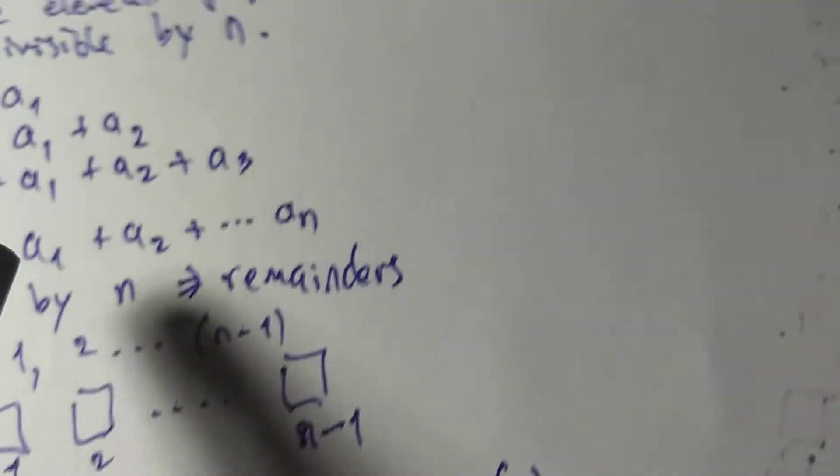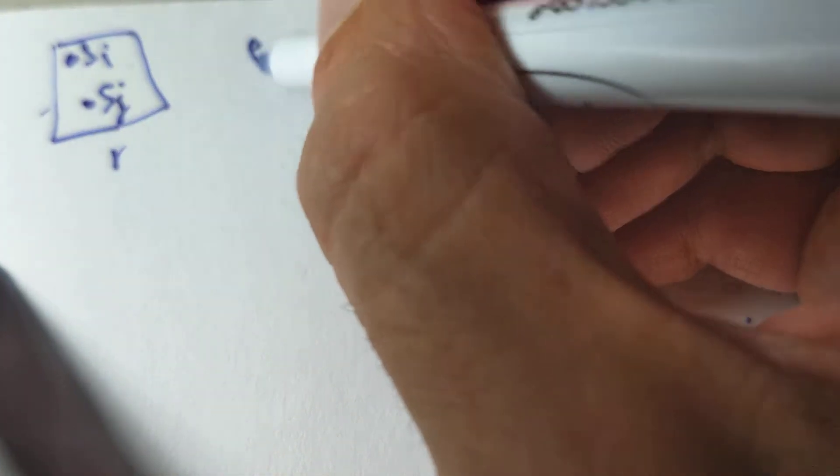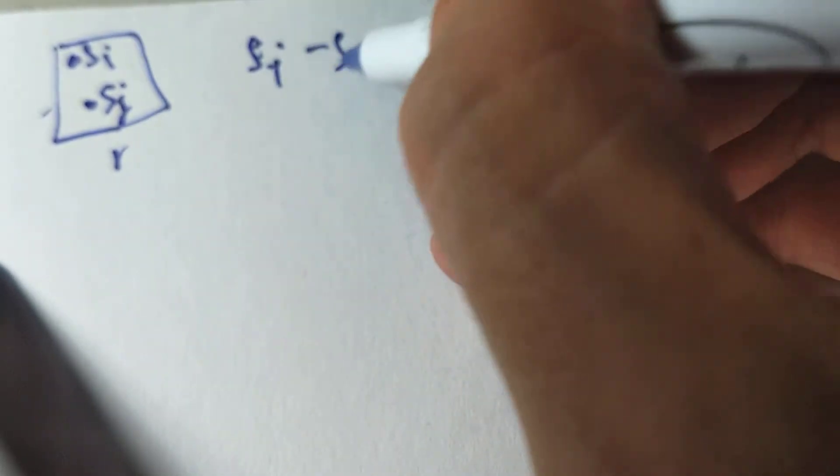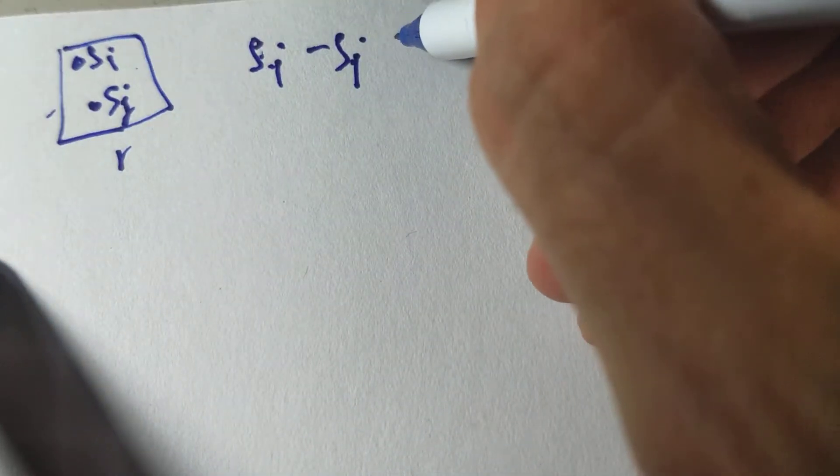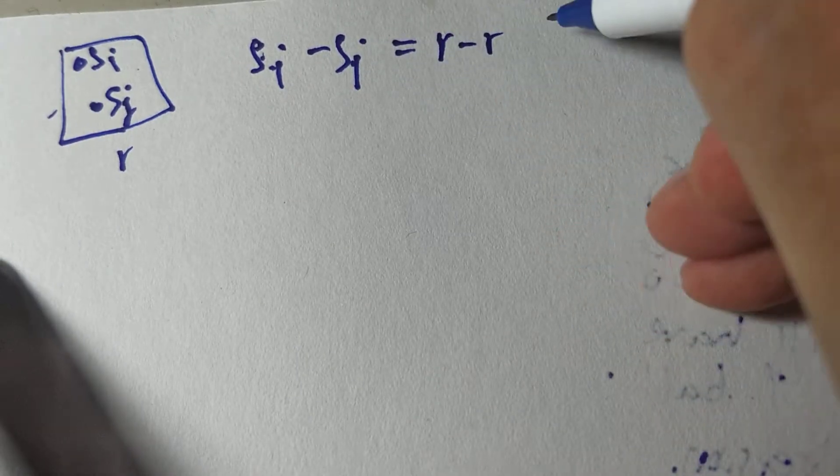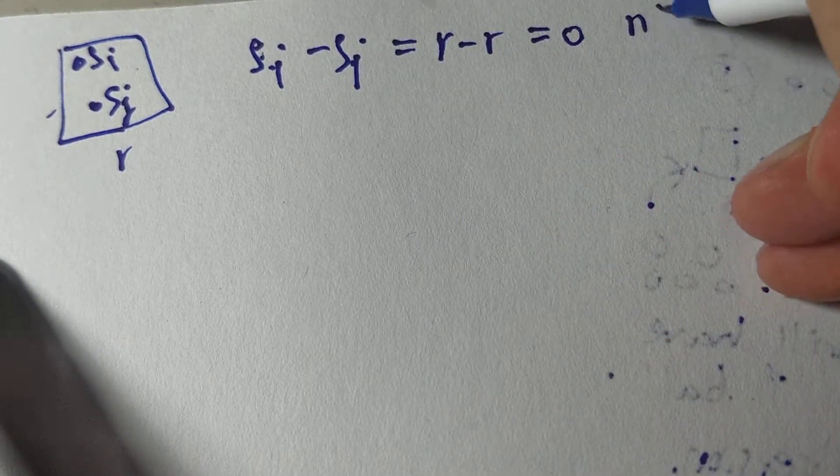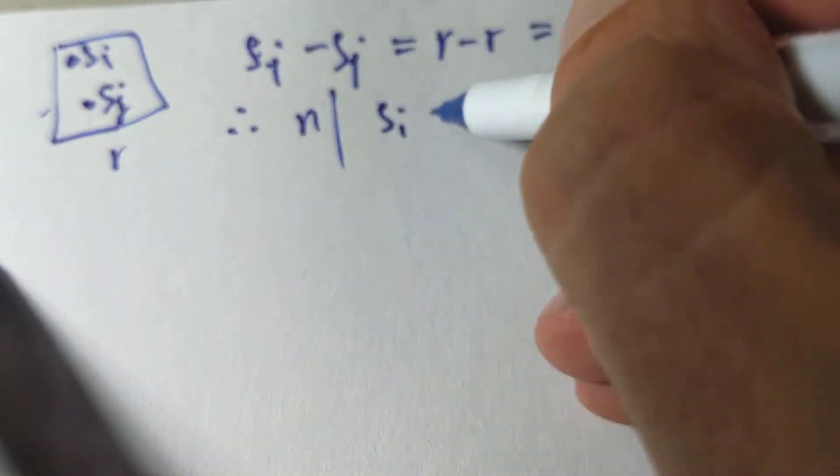Okay, so let's go up here and continue the logic. So, I have my box. Inside my box, I have SJ, and I have SI, and the remainder is R. And so, again, like we saw before, and another problem, I can subtract these two. SI minus SJ is equal to R minus R, and that's congruent to 0 mod N. And so, therefore, N divides SI minus SJ.